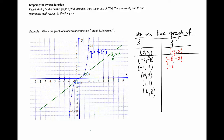Similarly, each point is going to be on the graph of f inverse. Switching 0 with 0 still gives us (0, 0). Switching 1 with 1 gives us (1, 1). Switching 2 with 8 will give me (8, 2). We plot those points in a coordinate system.